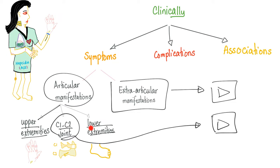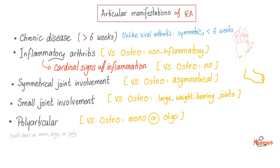Today, we'll talk about upper extremities and lower extremities. Rheumatoid is a chronic disease — more than six weeks of symptoms. Therefore, if you have pain in one joint that started two days ago and everything else is normal, you do not have rheumatoid. There is another type of arthritis that's also symmetric but lasts less than six weeks, and this is viral. Rheumatoid: more than six weeks. Inflammatory arthritis — this is different from osteo, which is non-inflammatory. Therefore, cardinal signs of inflammation, unlike osteo.